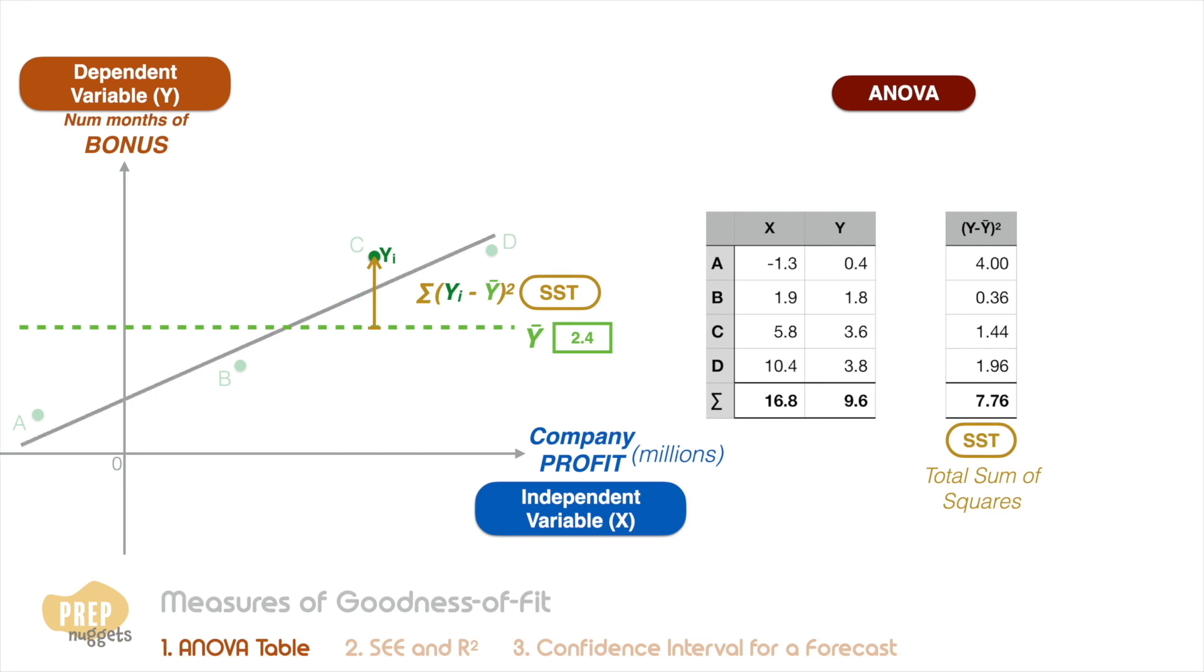Now let's bring back our regression model. Our model helps to explain part of the variation of the data points from the mean. For example, that this data point is far from the mean can be explained by our model that estimates that the bonus should be 2.88 months because of the high profits for that year.